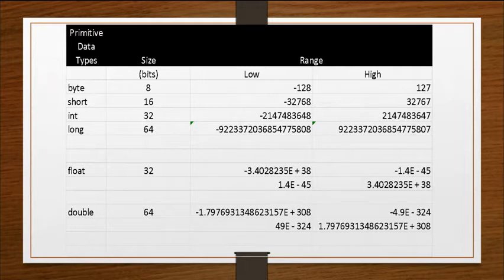So for integer types, we generally use the int data type. Down below are the two floating point types, float and double, and they have really large ranges. And generally, we would use the double type anytime we have a decimal value.